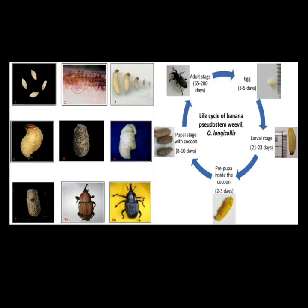The life cycle of Odioporus longicollis: the egg stage lasts 3 to 5 days, larval stages 21 to 23 days, pre-pupal stage inside the cocoons 2 to 3 days, and pupal stage within cocoons 8 to 10 days.